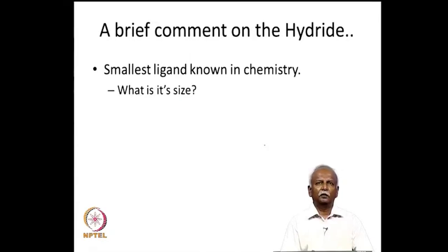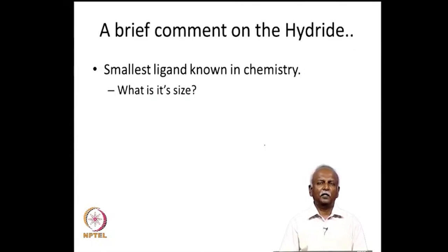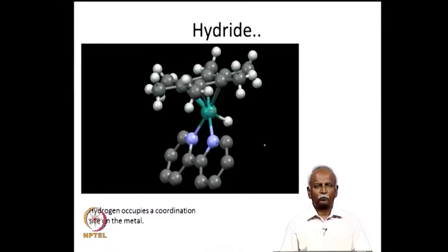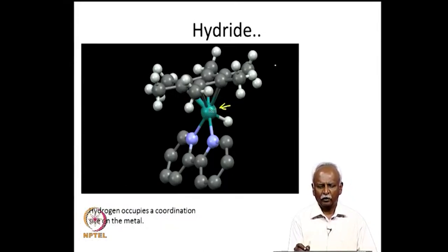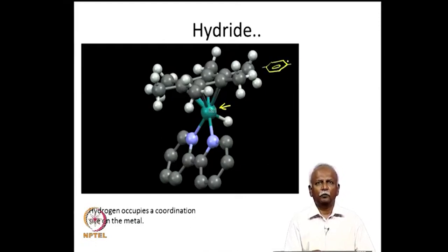Now let us consider the hydride, a unique ligand in chemistry. Hydrogen always poses a problem when generalizing concepts, and in this case it is a unique ligand. If you ask what its size is, it is difficult to give a proper answer. Here is a molecule where a ruthenium atom is coordinated to an aromatic ring system.